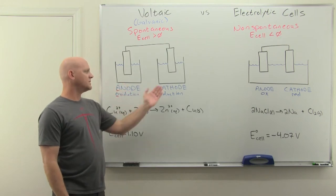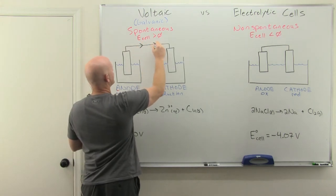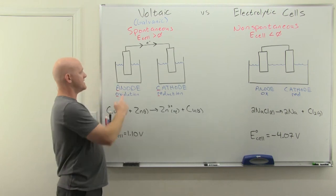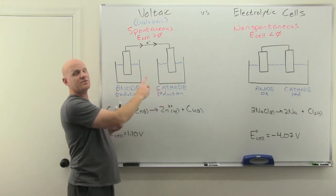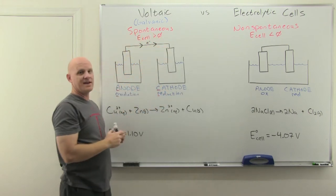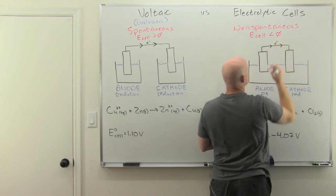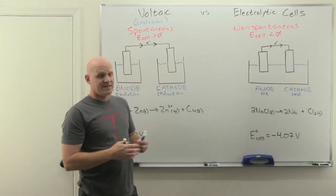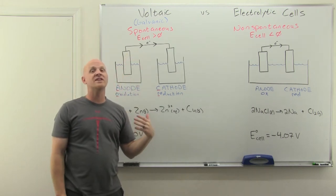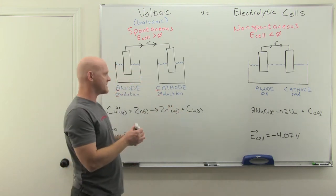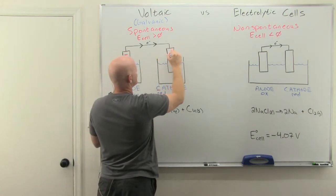Since the anode is where electrons are lost and the cathode is where electrons are gained, electrons must travel through the wire from anode to cathode. In a voltaic cell, the anode is negative and the cathode is positive — negative meaning lower potential, positive meaning higher potential. This is analogous to the negative and positive terminals on a car battery. Electrons spontaneously flow from low potential to high potential, i.e., from anode to cathode.